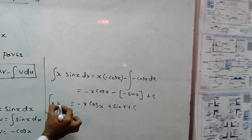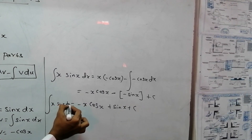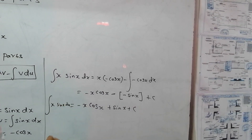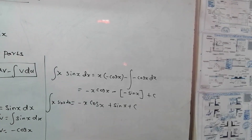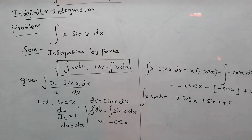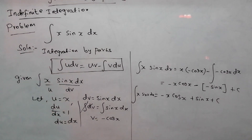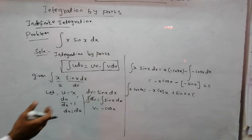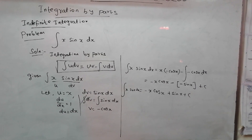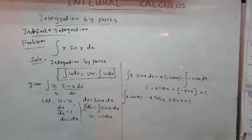The integral of x·sin(x)dx equals minus x·cos(x) plus sin(x) plus C. That's it. In indefinite integration, this is solved using the integration by parts method. This is very easy to solve. Thank you for watching.